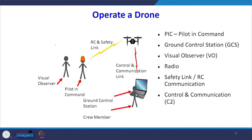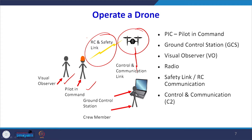When operating the drone, there is an observer and a pilot in command on the ground who control the movement of the drone system. They communicate via a safety link or RC communication link, and there is a control and communication link between the drone and the ground control station. At the ground control station, data is transmitted to a small processor device that can process the data, and you get processed data from the ground control station.